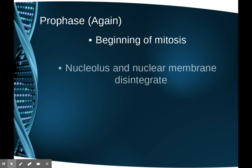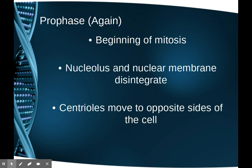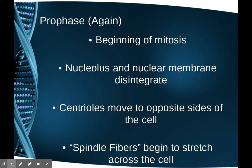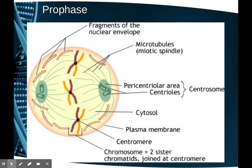In prophase, the nucleolus and nuclear membrane disintegrate, and centrioles move to opposite sides of the cell while spindle fibers begin to stretch across. For ease of diagramming, we'll use an imaginary cell with only three chromosomes. The nuclear envelope is disintegrated, spindle fibers extend from the centrioles at opposite poles, and the X-shaped chromosomes — two sister chromatids joined at the centromere — are in the middle as the spindle fibers start to grab onto them.